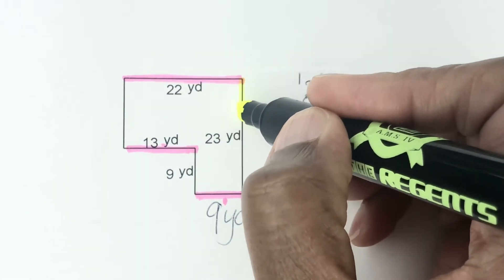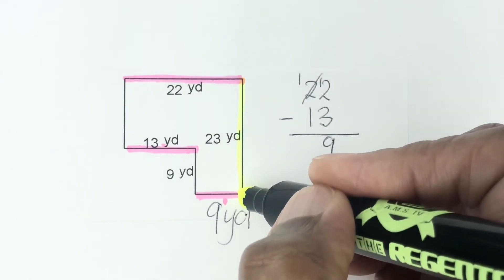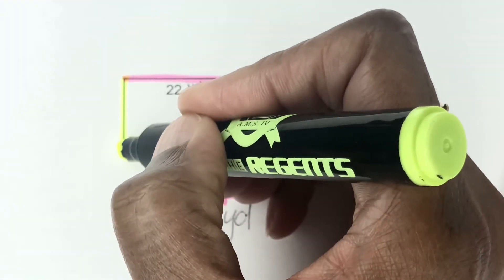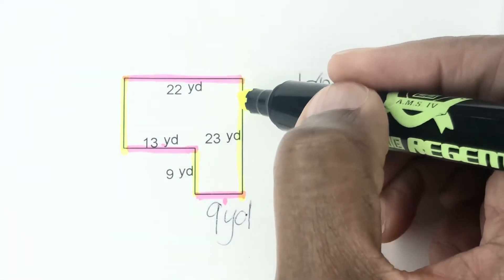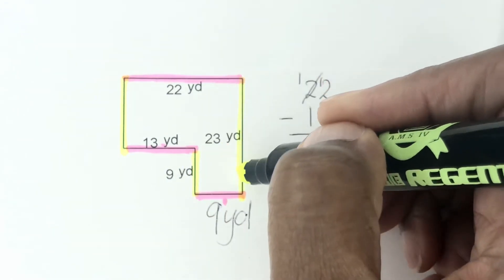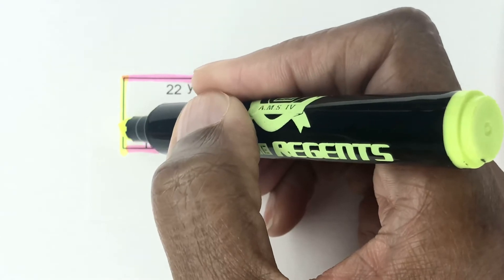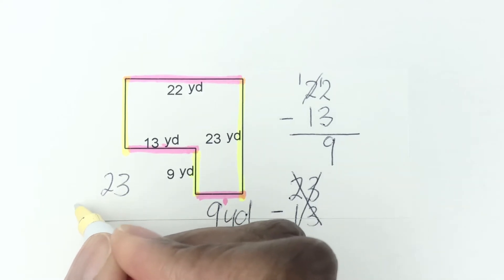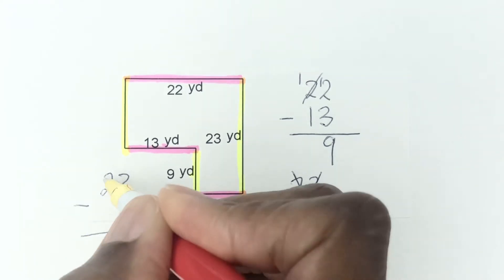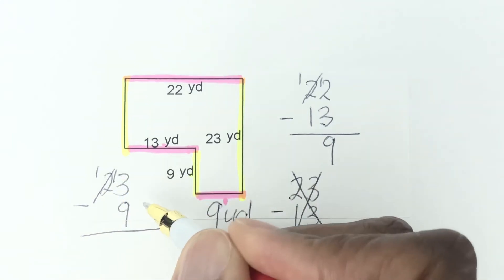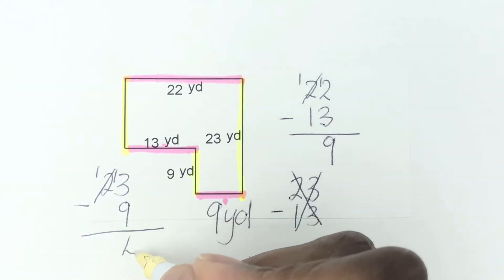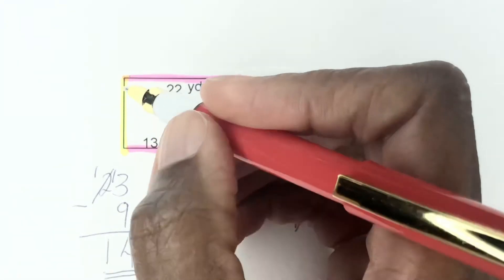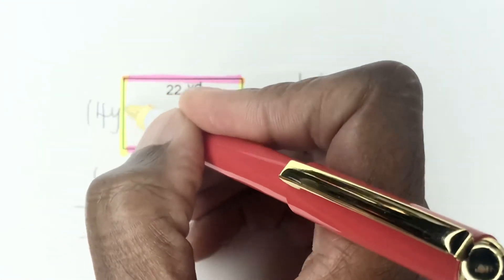All of this vertical side is 23 yards, and then this vertical side is missing. So we have the whole of 23 and the known side of 9 — we subtract 9 from 23 to get the missing side. Subtract what you know to get what you don't know. A little regrouping: 13 minus 9 gives us 4, and 1 minus nothing is still 1. So this missing side is 14 yards.